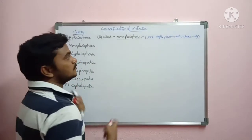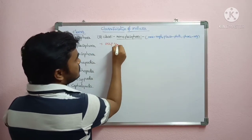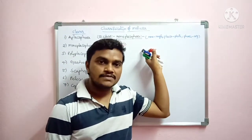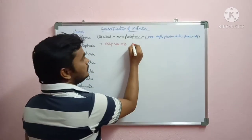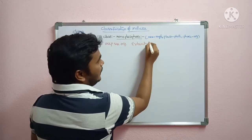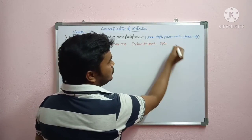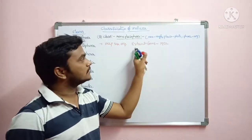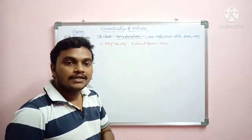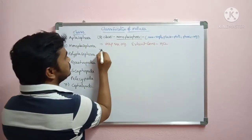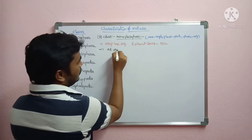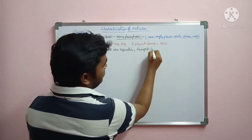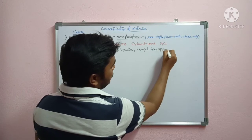Characteristics of Monoplacophora: these are deep-sea organisms. Naturally, Monoplacoforans are extant forms, recognized in 1952 — that means living forms recognized in 1952. All are aquatic forms with a limpet-like appearance.